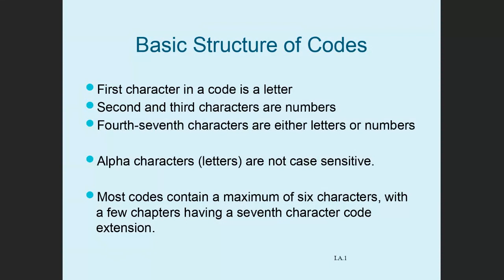For the basic structure of codes: the first character is always a letter. The second and third characters are always numbers. After that, it varies — the fourth to the seventh character can be letters or numbers, it depends. The alphabetic characters are not case sensitive, meaning a capital A or a small A doesn't matter. Most codes contain a maximum of six characters, with a few chapters having a seventh character code extension.